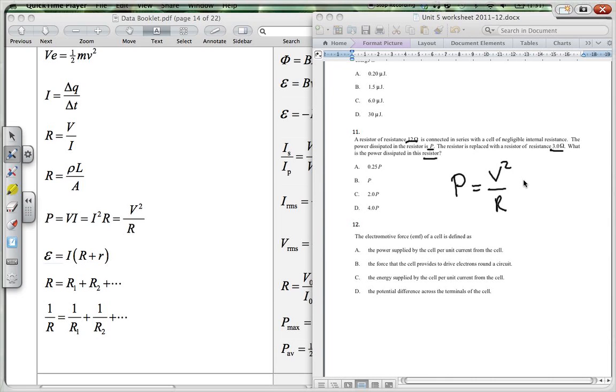So initially we're going to have V squared over 12, and then for the second one this would be P1, and then P2 would equal V squared over 3.